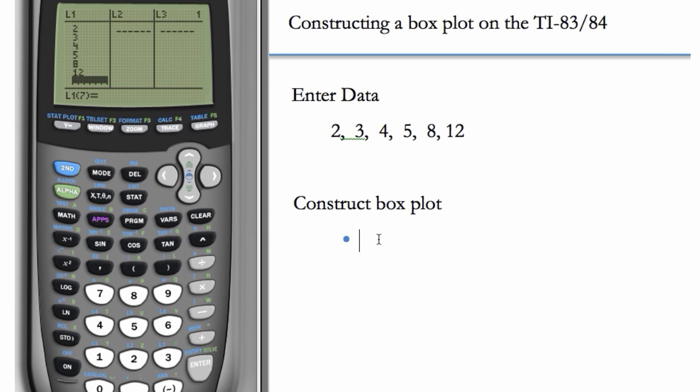Now that the data is entered, we can make a box plot or a statistical plot by going to 2nd y equals, and then we'll want to turn plot 1 on, make sure it's on, choose the graph of interest, which in this case is a box plot, and then we're going to zoom and choose zoom 9 to get a good window.